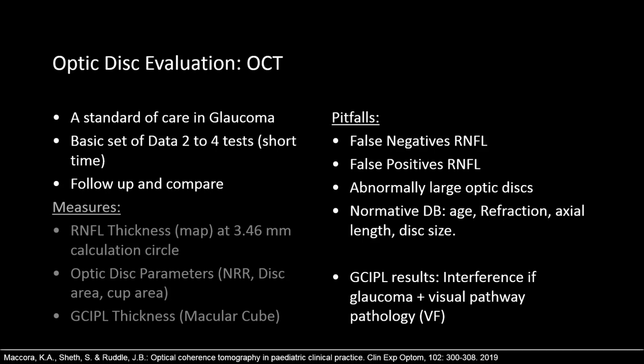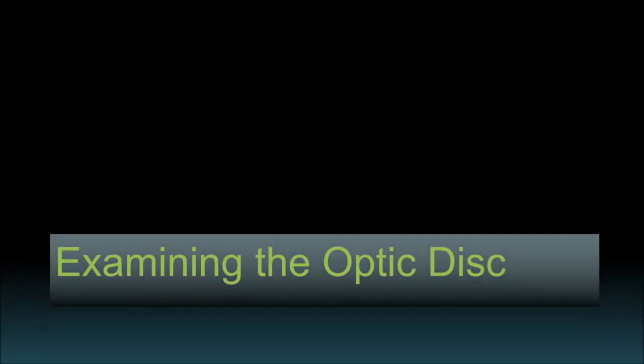A normative database for patients younger than 18 is lacking. The measurements for the ganglion cell layer may be affected by added visual pathway pathology, just like visual fields. All ancillary testing for glaucoma may not be sensitive or specific enough to diagnose glaucoma, and we must spend time looking at the optic disc to diagnose and follow up our patients. So, what do we see when we look at the optic disc?